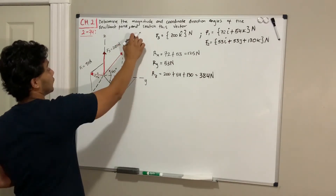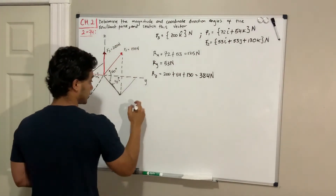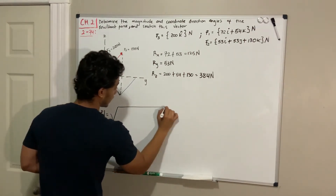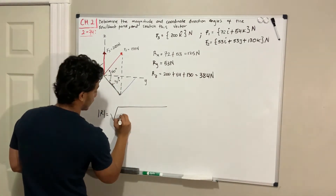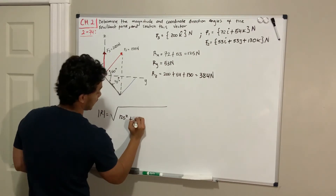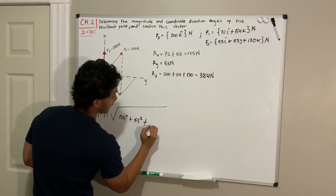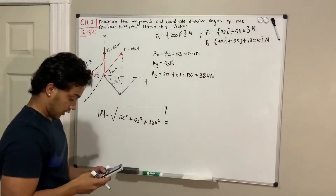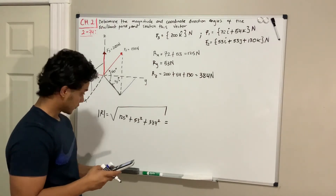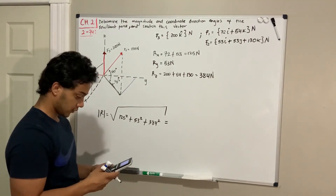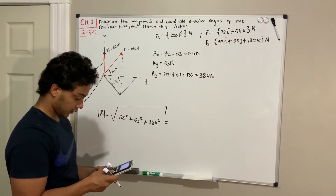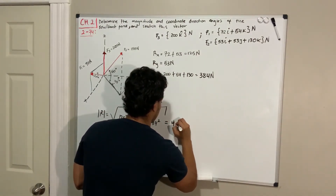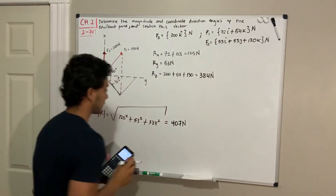They want us to find the magnitude. Applying the Pythagorean theorem, the magnitude is the square root of 125 squared plus 53 squared plus 384 squared. Using the calculator, this gives 407 newtons — that's the first answer.